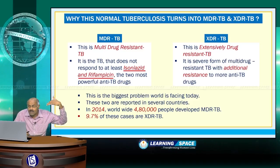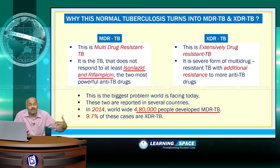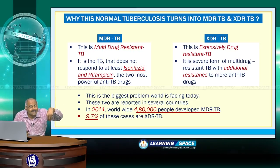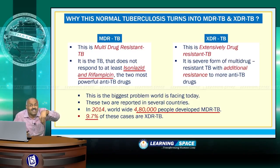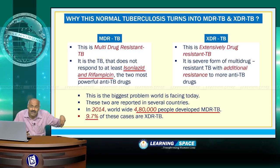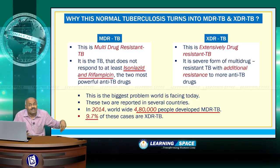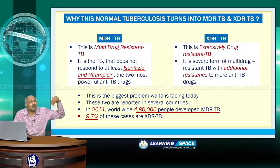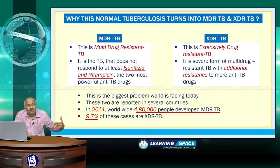In 2014 alone, worldwide 4,80,000 people developed MDR-TB. Roughly 9.7% — approximately 10% — of these cases are extensively drug resistant TB. Treatment and medication for XDR-TB is highly difficult, and survival chances are also reduced once people contract extensively drug resistant TB.